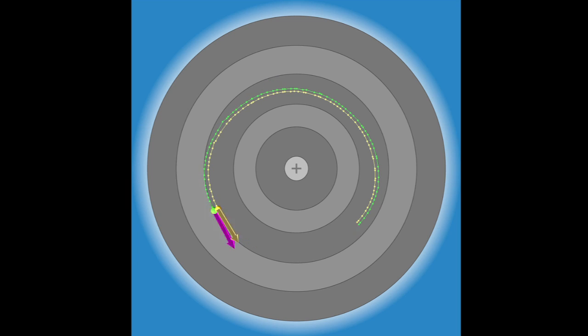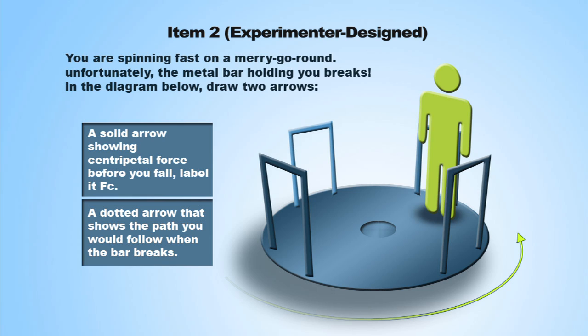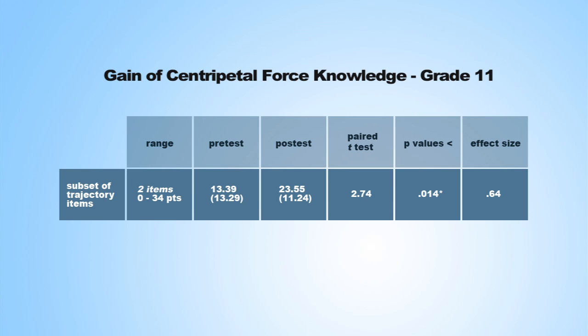Circular motion and the trajectory of release is a common misconception. We gave this item from the FCI — the Force Concept Inventory — to 17 high school students who were halfway through their physics course. At that point, only 47% got it correct. After two short sessions in Smallab, we re-gave the test, and now 89% got it correct — a statistically significant increase.